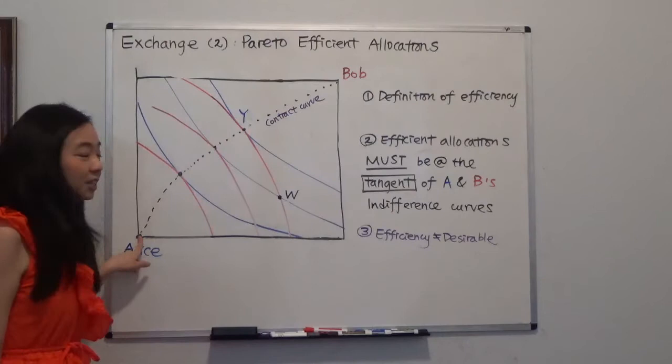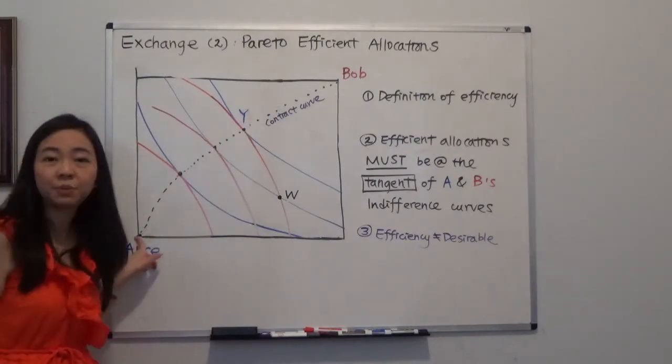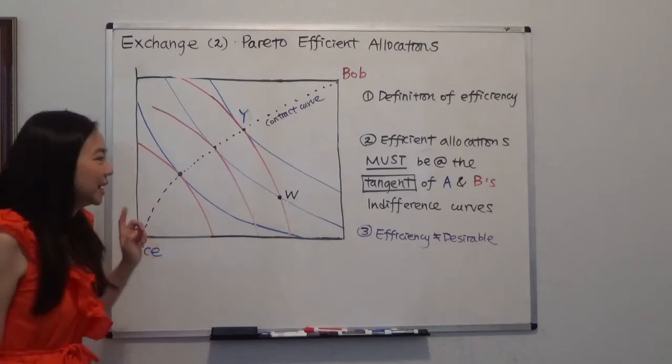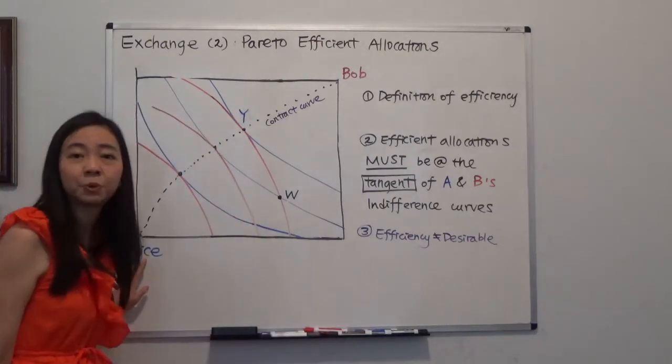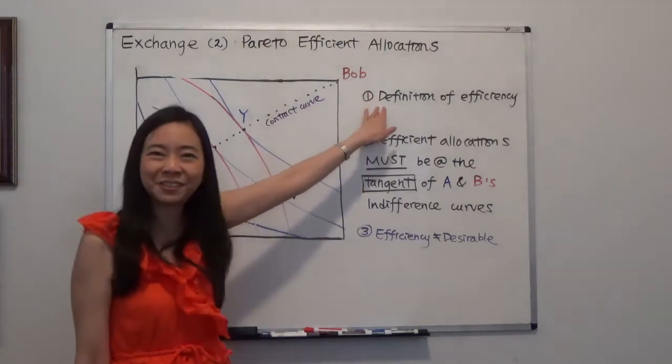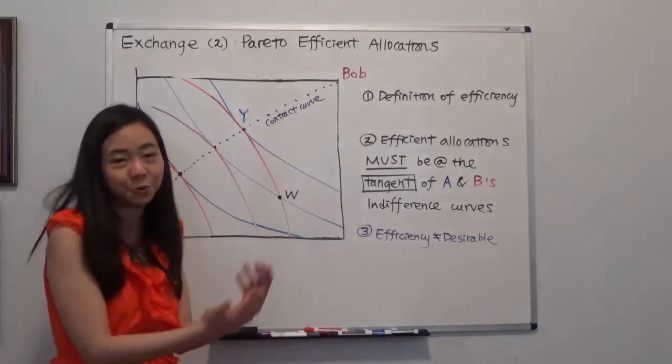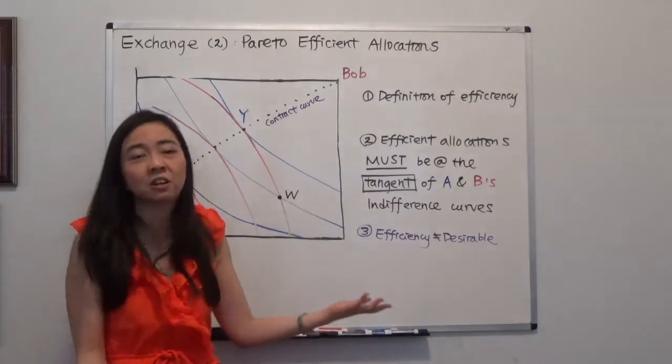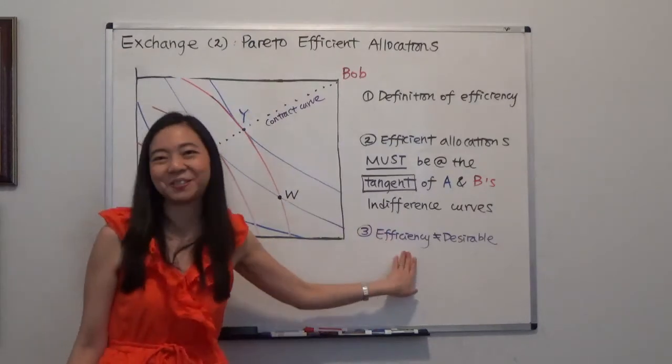So you know, at this point where Alice has nothing and Bob has everything, the outcome is efficient. But is it desirable? Of course not. We don't want a society where someone has nothing and the other person has everything. Because we know that's where revolution comes from. Well, for the French Revolution, because the people in the bottom, they had nothing to eat, so they start a revolt. So efficiency doesn't mean that it's desirable.